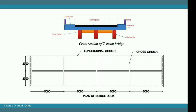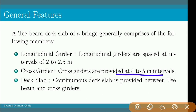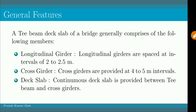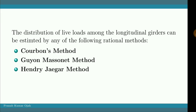The longitudinal girders are spaced at intervals of 2 to 2.5 meters. Similarly, the cross girders are provided at 4 to 5 meter intervals. The continuous deck slab is provided in between the longitudinal girders and the cross girders.